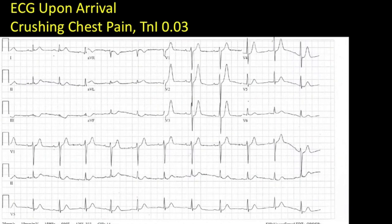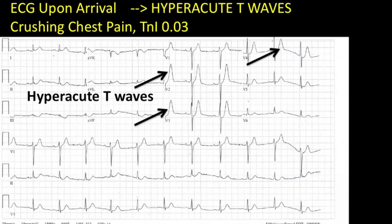And here's the initial EKG. What do we see? We see tall T-waves — very symmetric. They're not as pointed or tented as the ones you'd see with hyperkalemia, but you're going to want to rule that out also. So these are hyperacute T-waves, and they're seen here in the anterior leads, especially V2 through V4, maybe even V1.